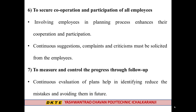The sixth step is to secure cooperation and participation of all employees. Involving employees in the planning process enhances their cooperation. Continuous suggestions, complaints, and criticisms must be solicited from the employees. The seventh and last step of planning is to measure and control the progress through follow-up. Continuous evaluation of plans helps in identifying and reducing mistakes and avoiding them in the future.